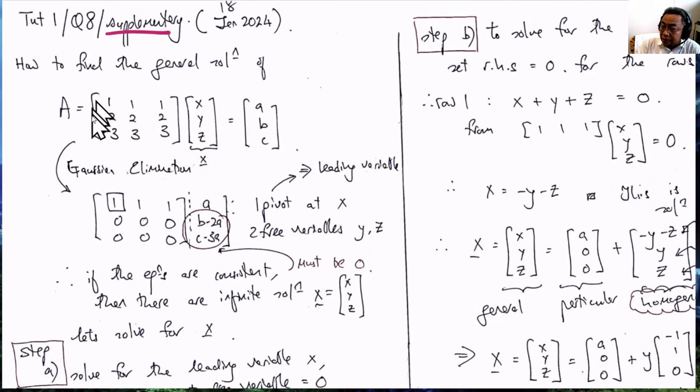Notice that A is singular. It has only one independent row or one independent column. You can see that row 2 is nothing but 2 times row 1, row 3 is 3 times row 1.